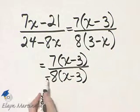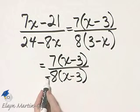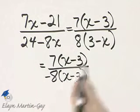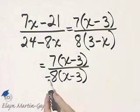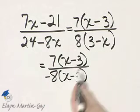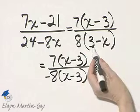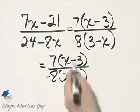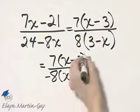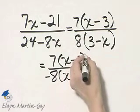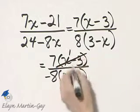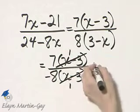Now to make sure you can convince yourself of this, negative 1 times x, that is negative x, and negative 1 times negative 3, that is a positive 3. So factoring out a negative 1 does make these two factors common factors, and I can divide them out.